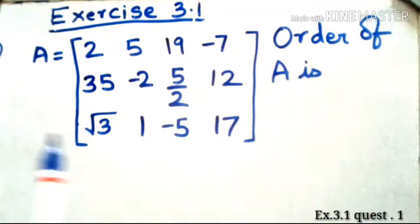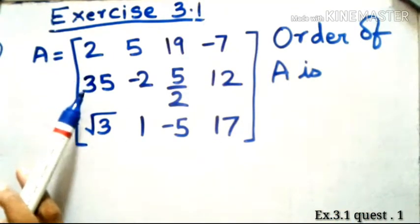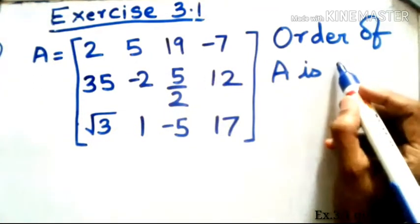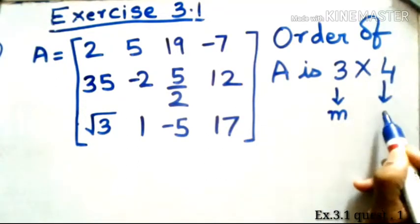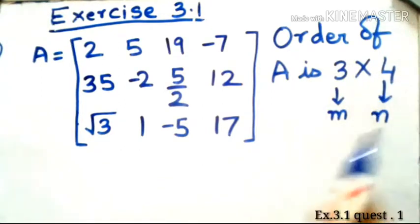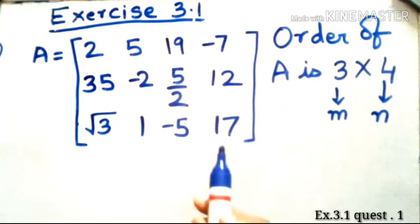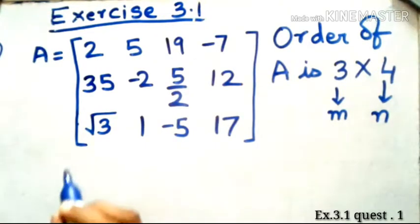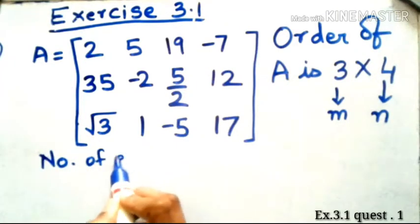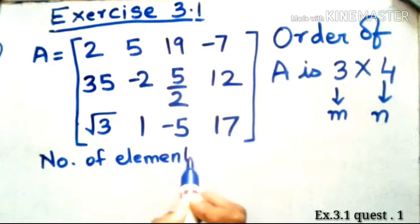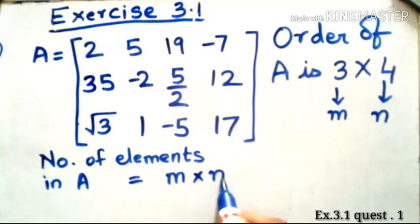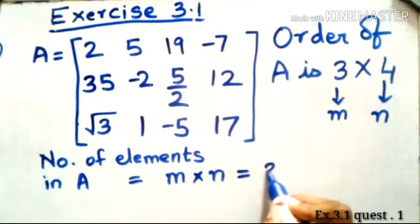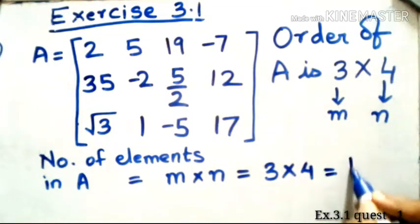The first part is to find the order of the matrix. Counting the rows and columns, there are three rows and four columns, so the answer is 3×4 where 3 is m and 4 is n. For the second part, the number of elements in matrix A equals m×n, where m is the number of rows and n is the number of columns, so that is 3×4 = 12.